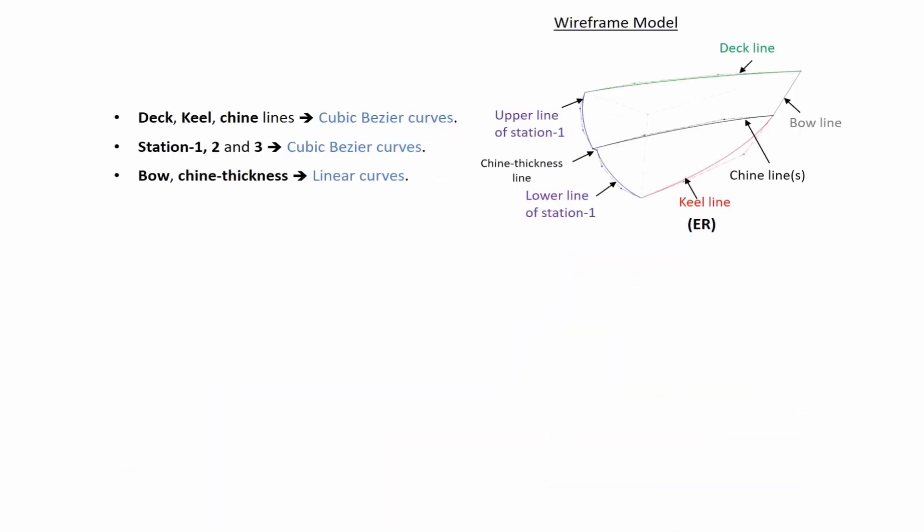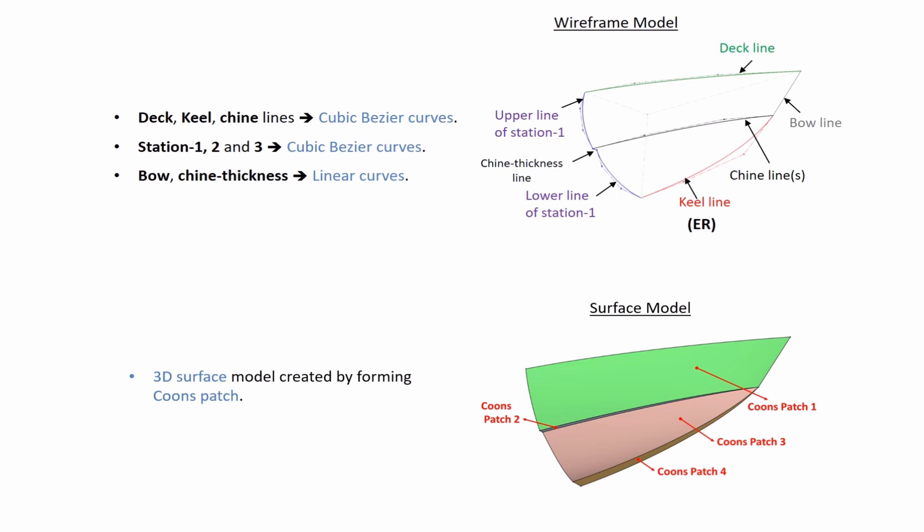For a higher degree of design freedom, deck, keel, chin, and station lines in each region are created by utilizing cubic Bézier curves. 3D surface models of the hull are generated by forming Coons patches between the feature curves of each region.